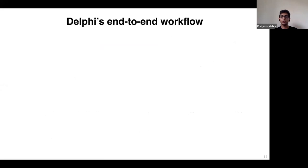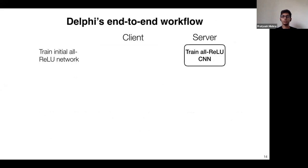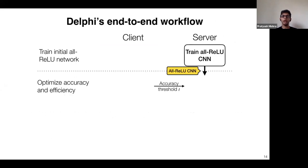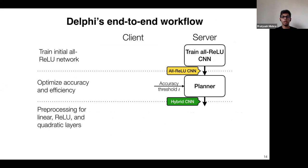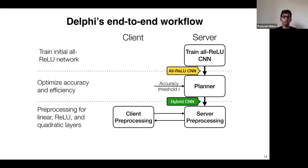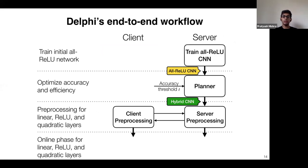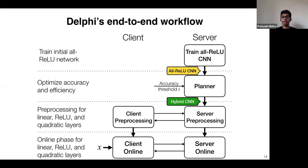Putting the whole package together, Delphi's end-to-end workflow is as follows: the server trains its all-ReLU network, then asks the client for the minimum acceptable accuracy and plugs these into the planner. The planner outputs a hybrid network, which is then used for cryptographic preprocessing. The client and server engage in preprocessing to obtain stored material. Then in the online phase, when the client gets input x, it interacts with the server using the online protocol to obtain the prediction M(x).